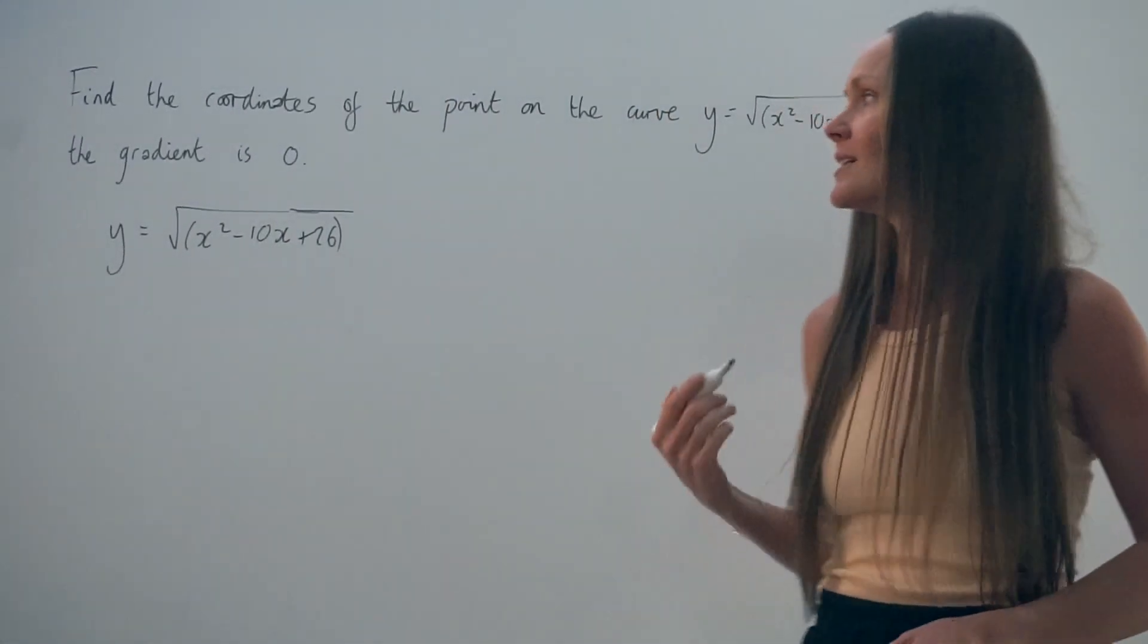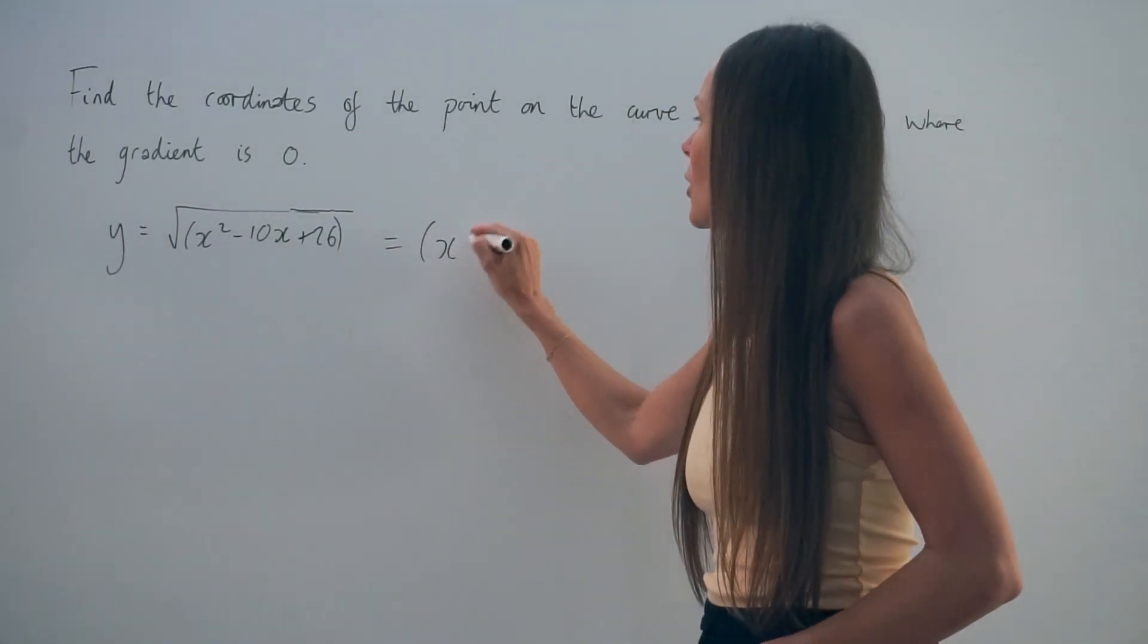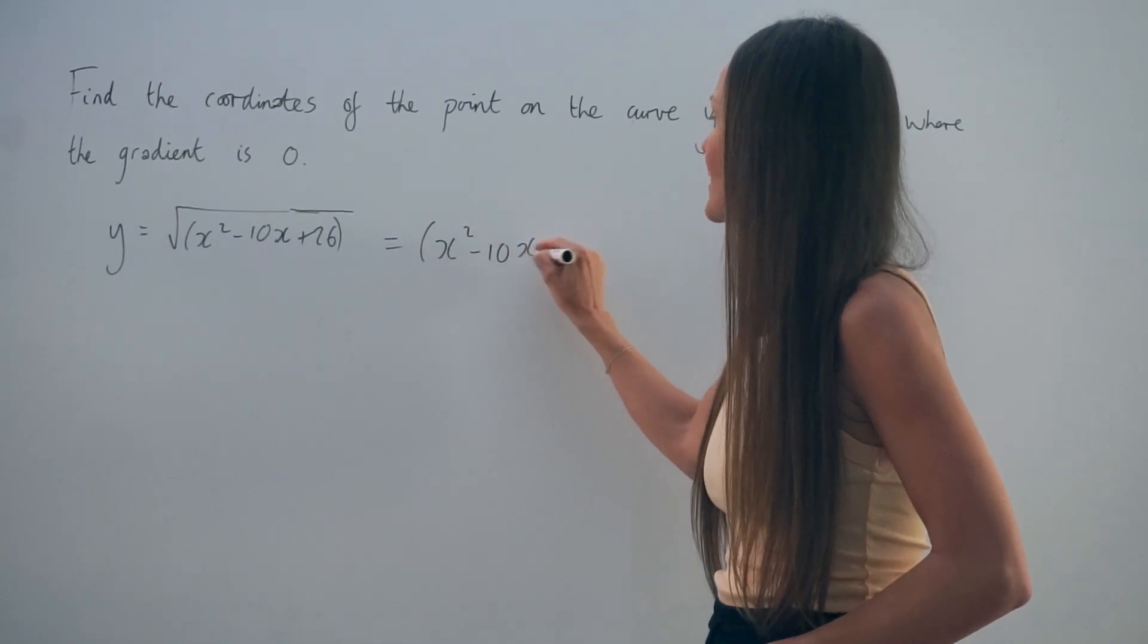So before I do that, I'm just going to rewrite the equation in a different way. And I'm going to replace the square root symbol with the power of a half. So these mean the same thing.